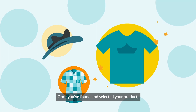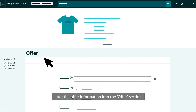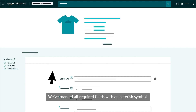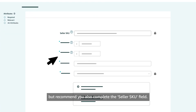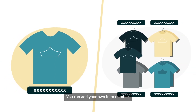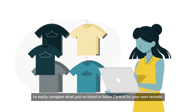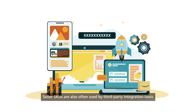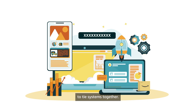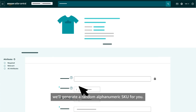Once you've found and selected your product, enter the offer information into the Offer section. We've marked all required fields with an asterisk symbol, but recommend you also complete the Seller SKU field. You can add your own item number or a unique identifier you use to categorize your products to easily compare what you've listed in Seller Central to your own records.